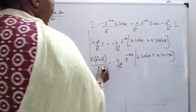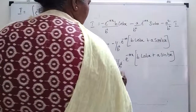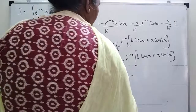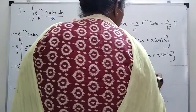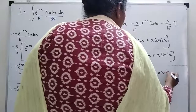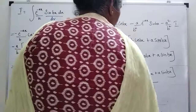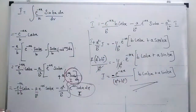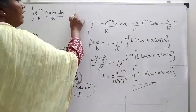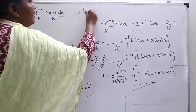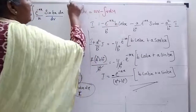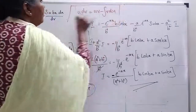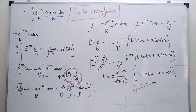The b squared cancels, giving the final result: I is equal to e power minus ax divided by (a squared plus b squared) into (b cos bx plus a sin bx), plus a constant. You only need to remember one formula: integral u dv is equal to uv minus integral v du.